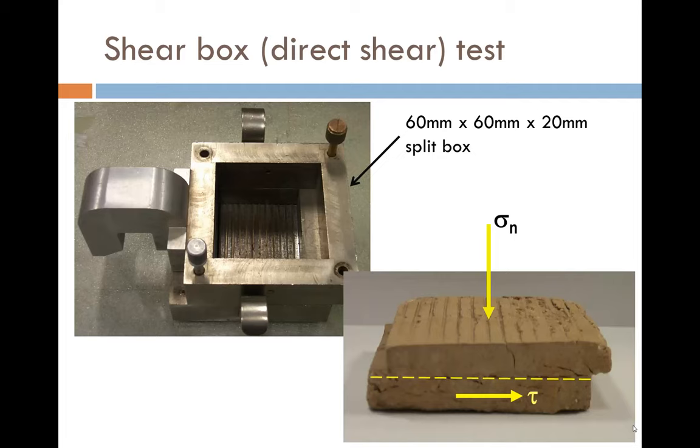On the left is a photograph of the split box which forms part of the apparatus. A sample is placed in the shear box and a shear force is applied so that one half of the box moves relative to the other. This generates a plane of shear along the centerline, as you can see from the tested clay specimen on the right. The shear stress along the plane is tau and the normal stress is sigma n.